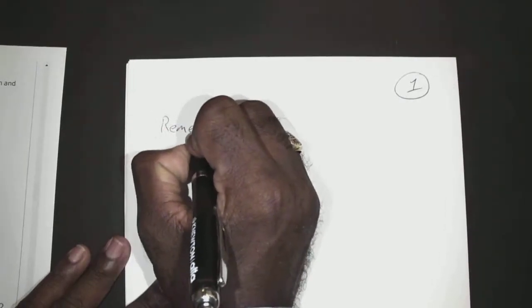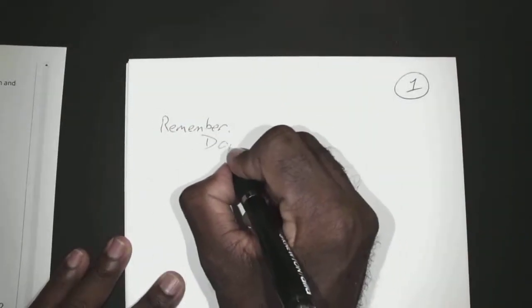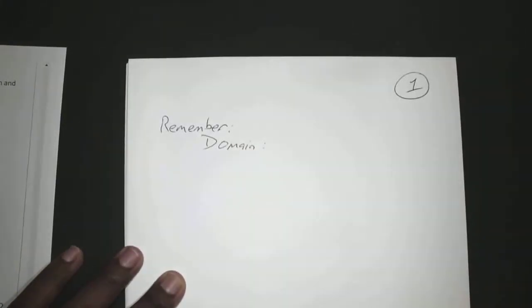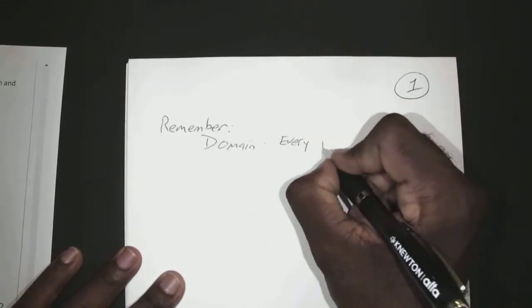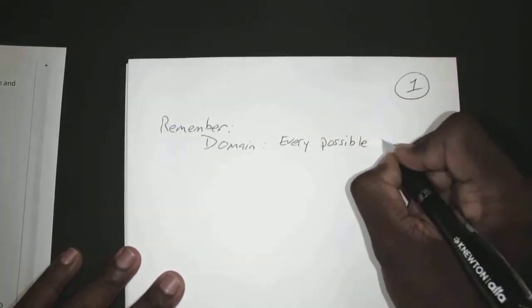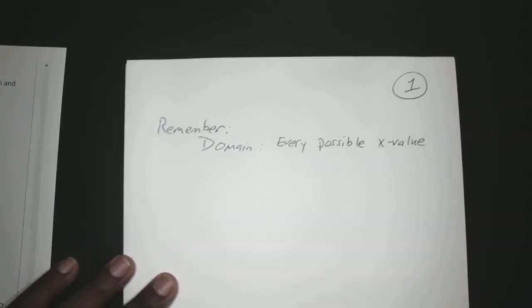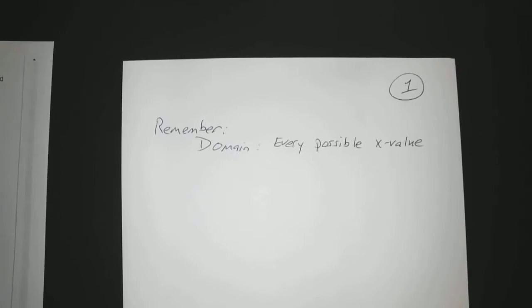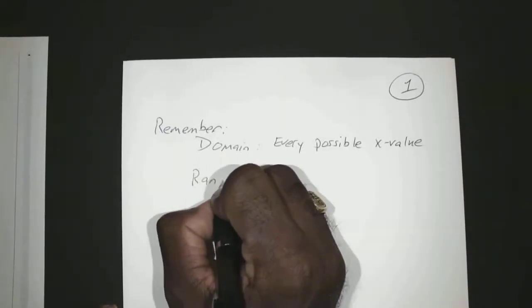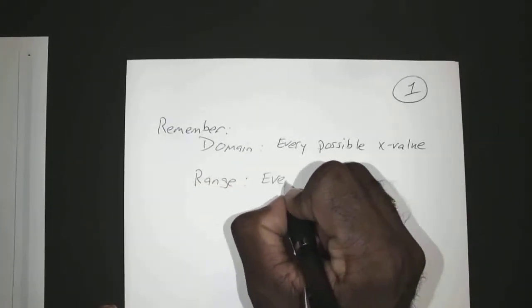So now we have the functions. On these next ones, we're going to look at the domain and range of a graph. If you remember, the domain is every possible x value. And the range is every possible y value.